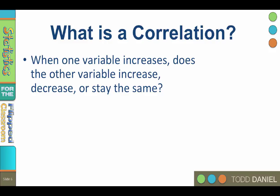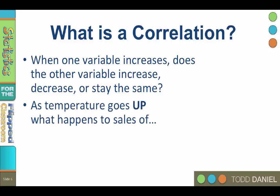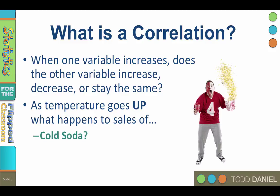Let's imagine that we are running the concession stand at the football game. American football season begins in late August, and the weather will still be hot. But by the end of the season in November, the weather will be cold. So we need to know how much product we should order. As temperature goes up, what happens to the sales of cold soda? It also goes up. Hotter temperatures correlate with more cold soda sales, and cold temperatures mean fewer cold soda sales. These two variables go up and down together — they change in the same way.